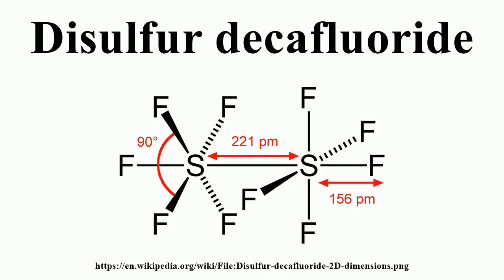S2F10 reacts to form sulfur chloride pentafluoride: S2F10 + Cl2 → 2 SF5Cl. The analogous reaction with bromine is reversible and yields SF5Br. The reversibility of this reaction can be used to synthesize S2F10 from SF5Br. Ammonia is oxidized by S2F10 into NSF3.